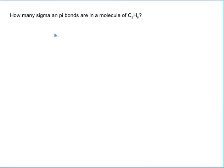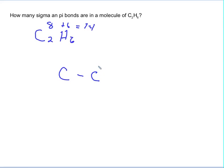So for C2H6, you count up the valence electrons. Carbon has four, but there are two of them, so that's eight. Hydrogen has one, and there are six of them. So eight plus six is 14. Connect everything with a single bond—hydrogens go on the ends. Then you count to make sure you have 14: two, four, six, eight, ten, twelve, fourteen. Everything has the octet rule satisfied.